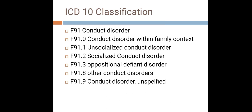F91.0 is conduct disorder within the family context. The dissocial and aggressive behavior is almost entirely confined to the home setting or family environment — occurring among or with family members and not extending outside the family context.